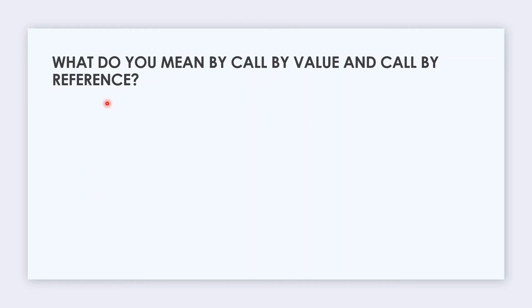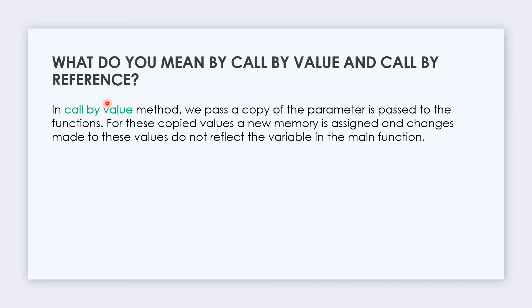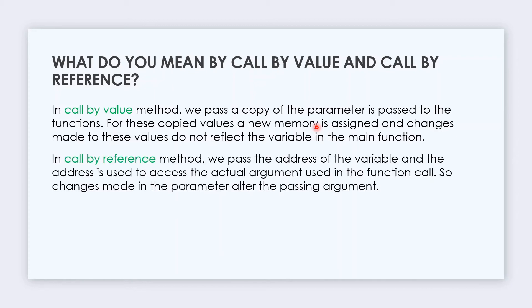The next question is: What do you mean by call by value and call by reference? This is a very favorite question of interviewers. In call by value method, we pass a copy of the parameter to the function. For this copied value, a new memory is assigned and changes made to the value do not reflect the variable in the main function.